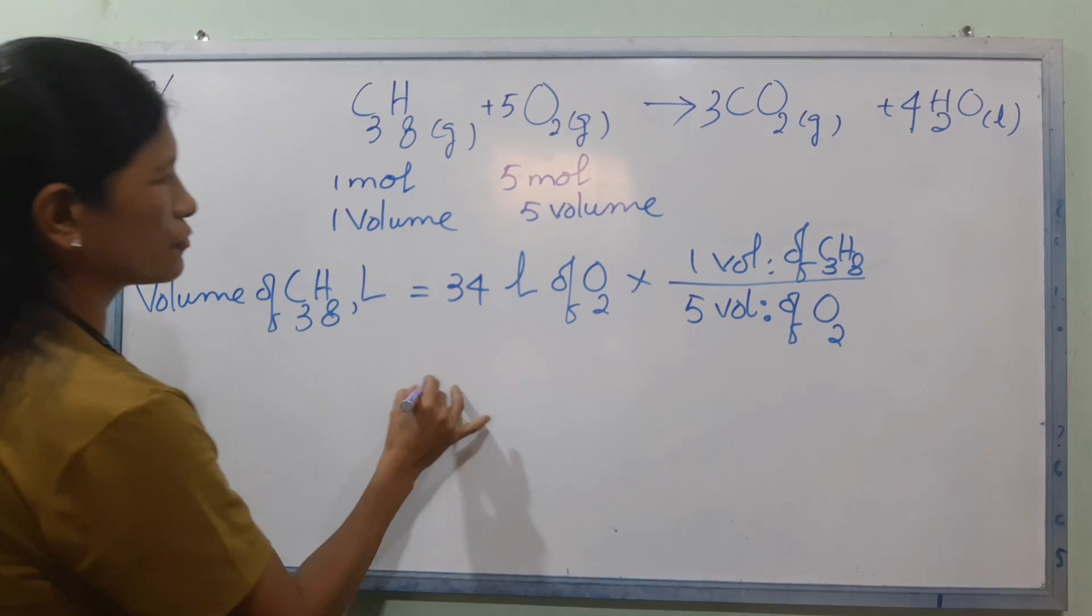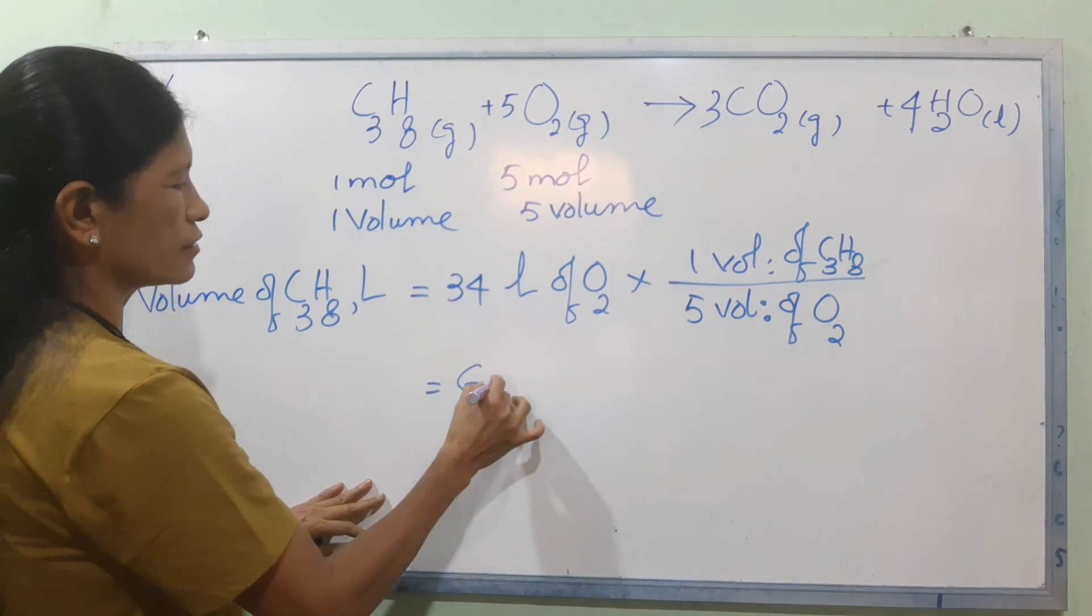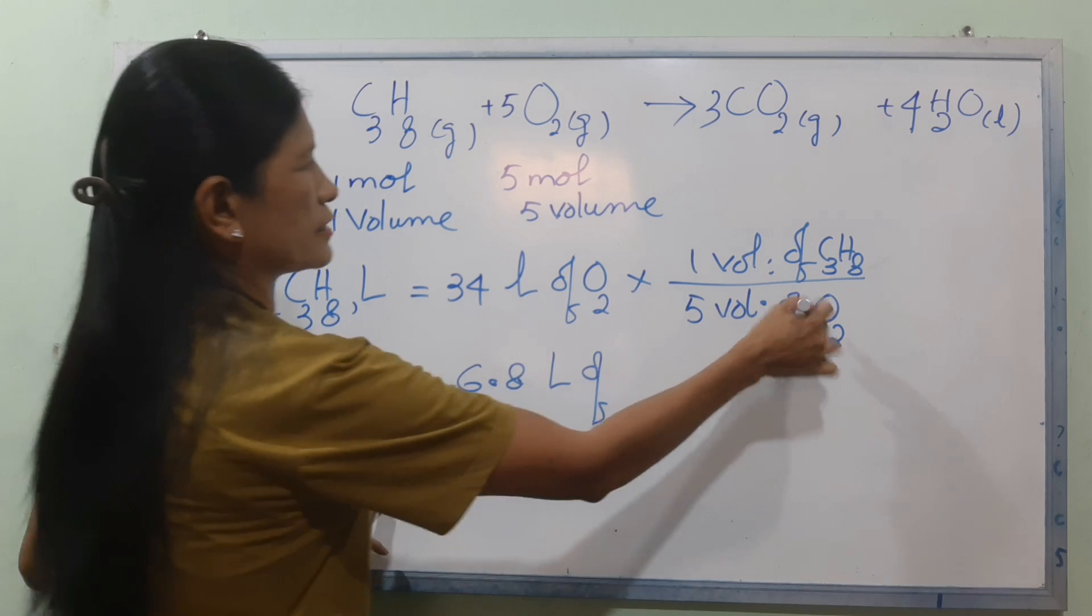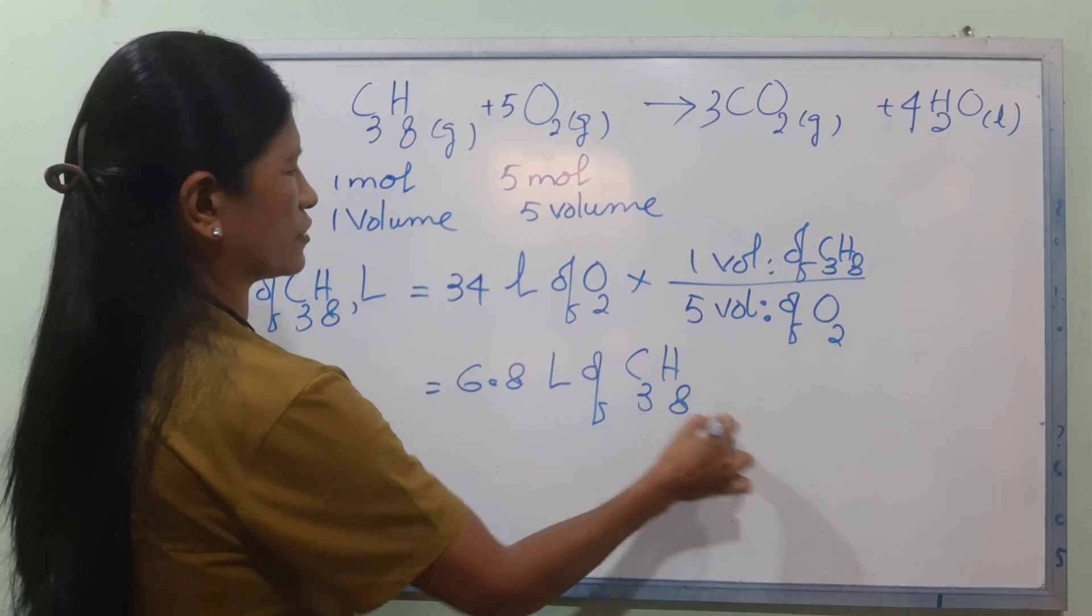Now, with 34 liters of oxygen divided by 5 equals 6.8 liters of C3H8.